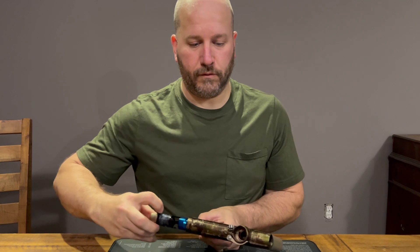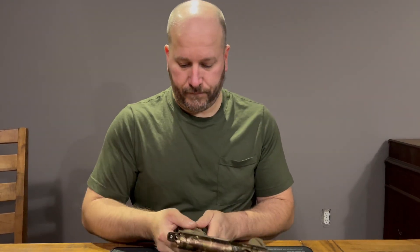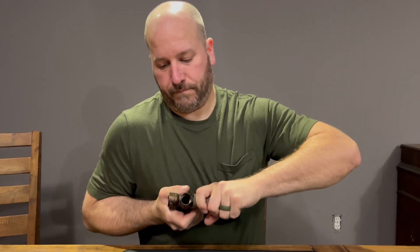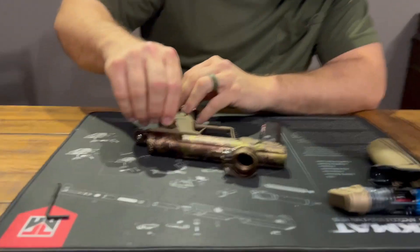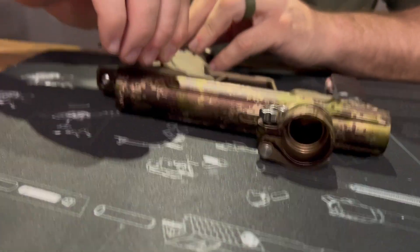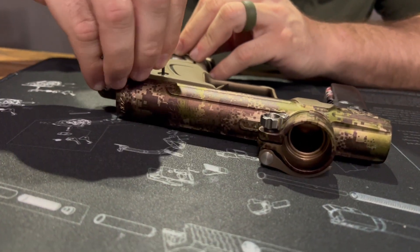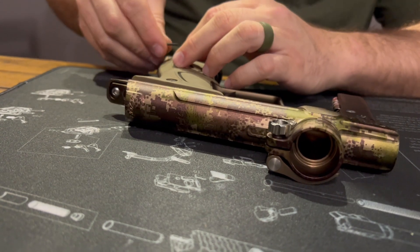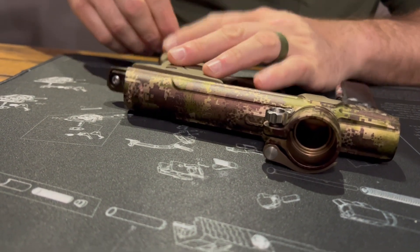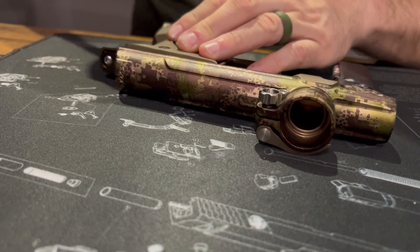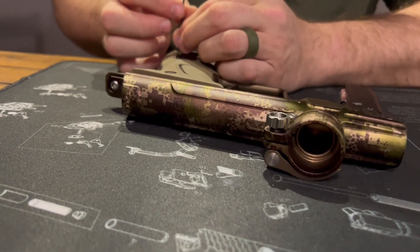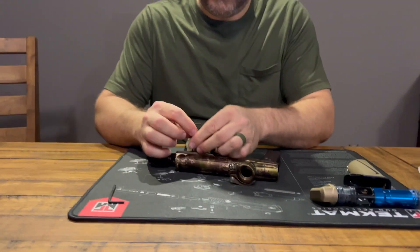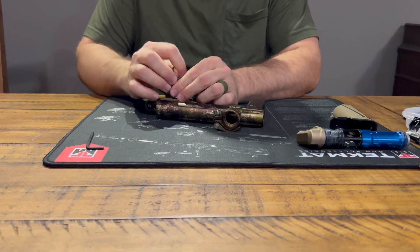First thing you want to do is remove your bolt, set that off to the side, and then we're going to remove the front grip and take the grips off. You definitely want to have a nice clean workspace to work in. You don't want to lose anything. You want to keep everything together.